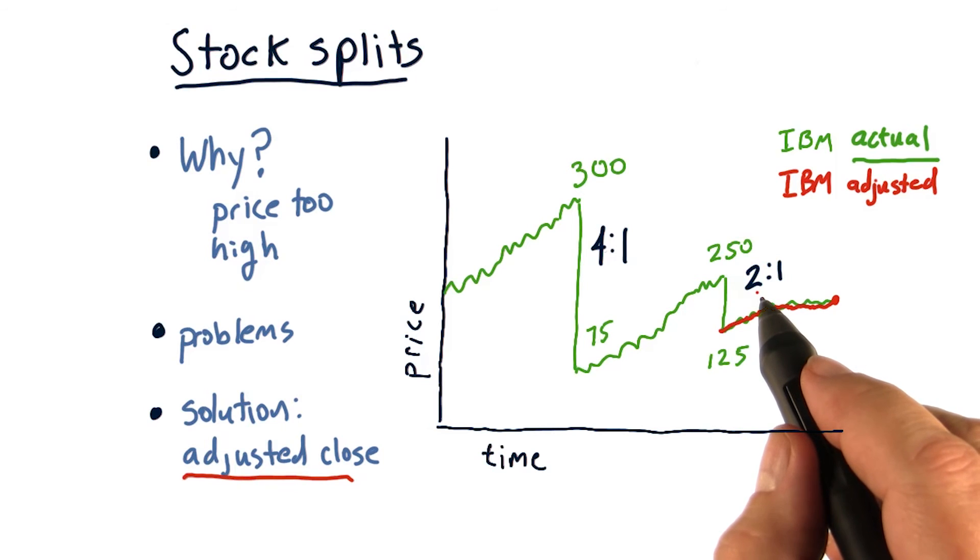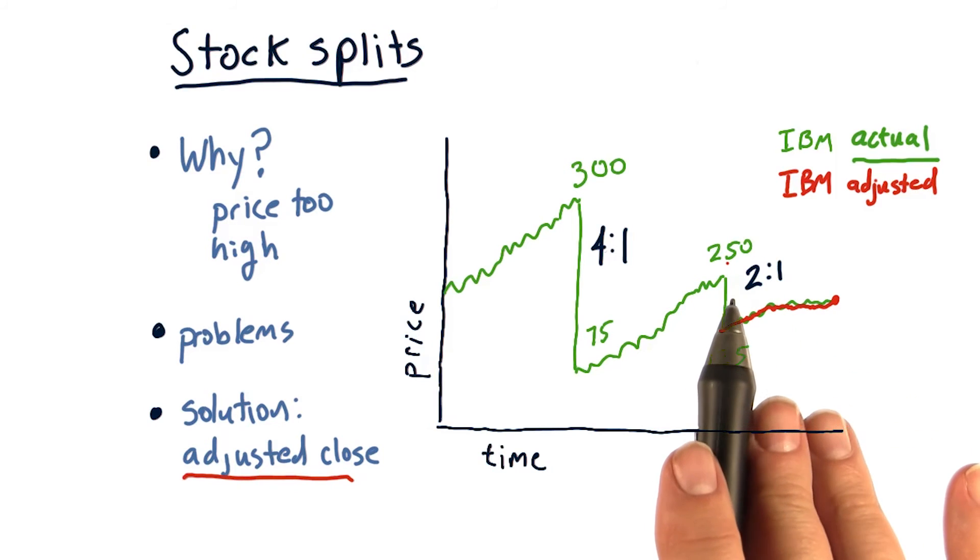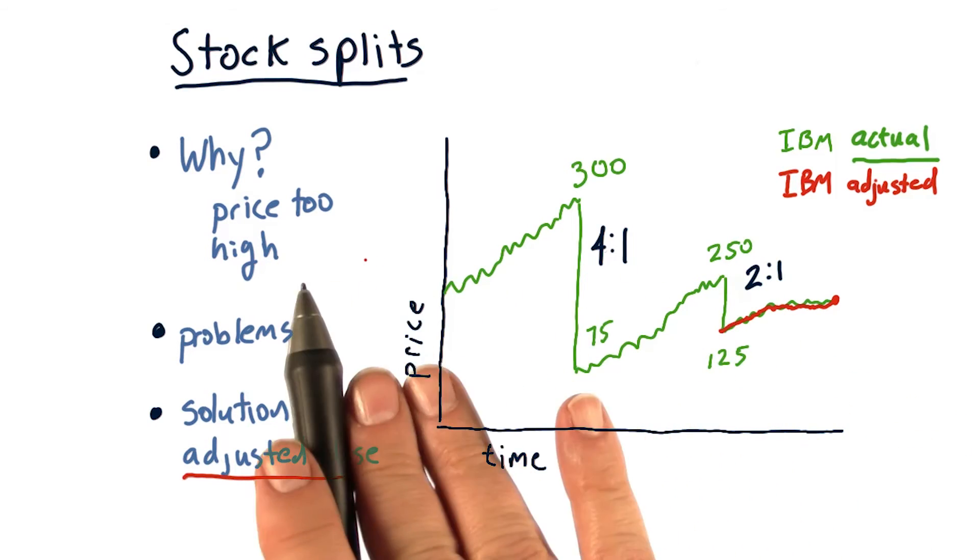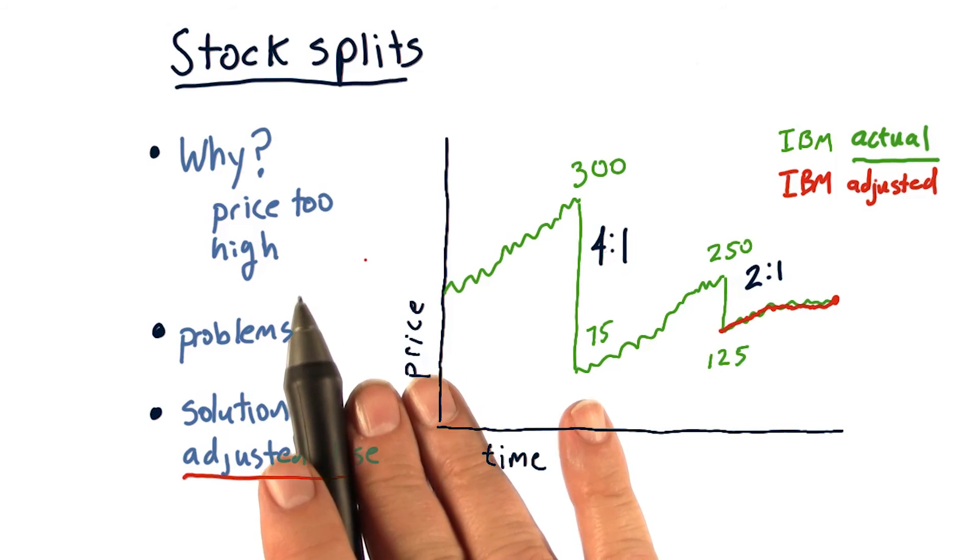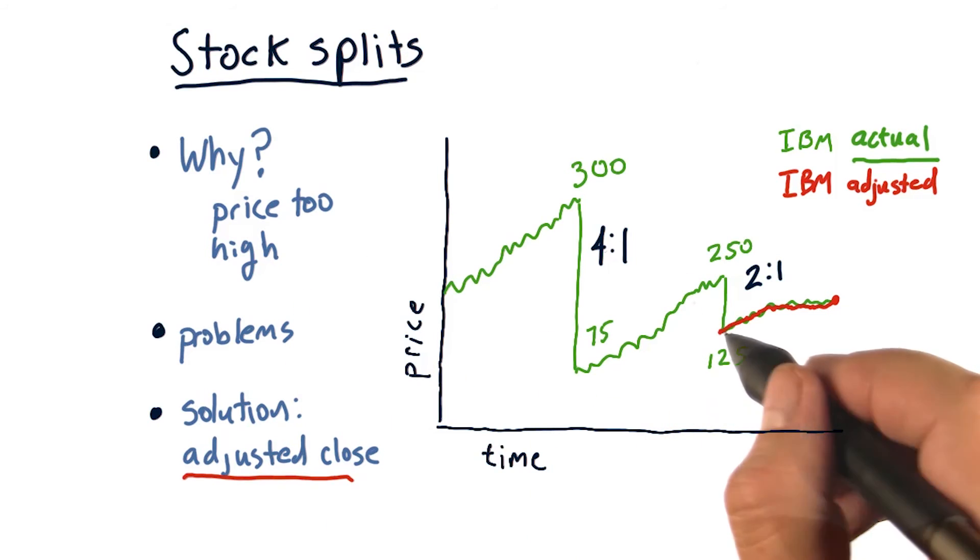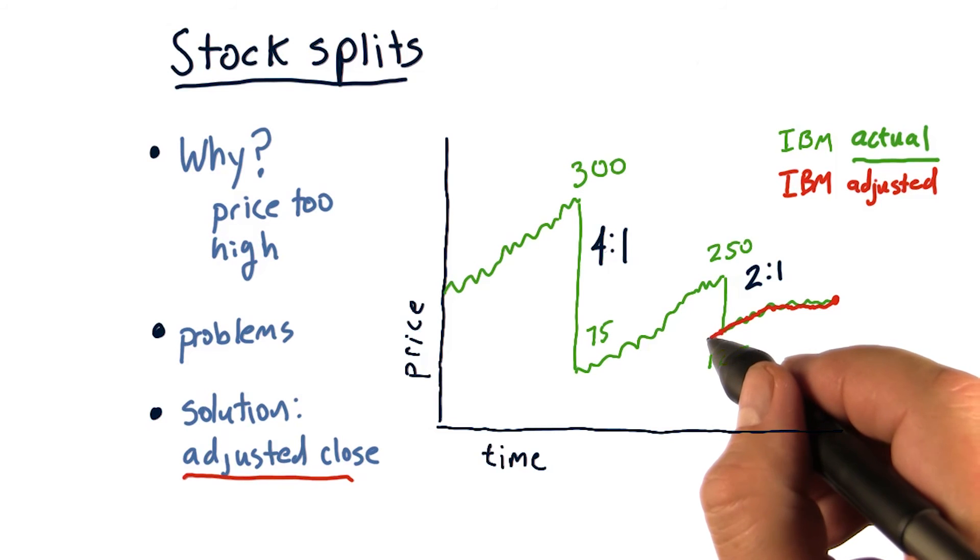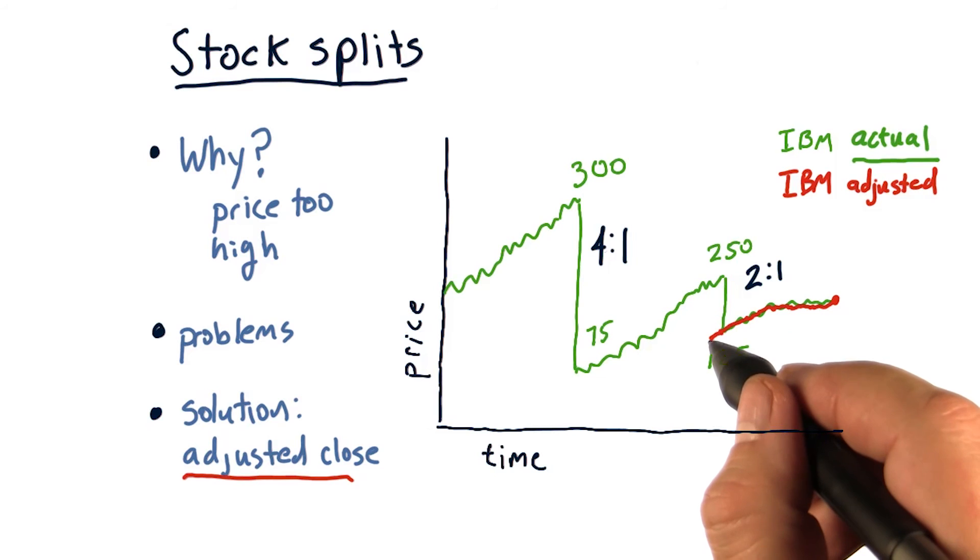what we do is we go back over all the historical data, and we divide it all by two. So the first day before this split, we get about $125 price instead of that $250.